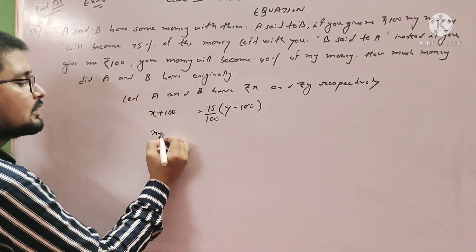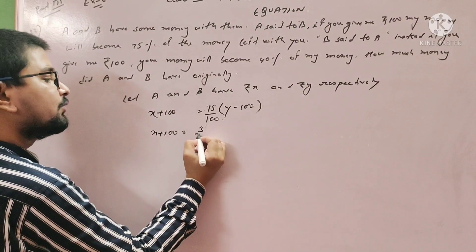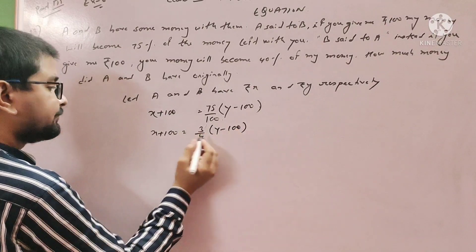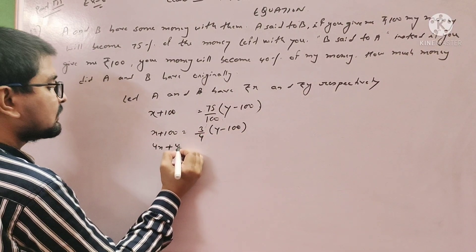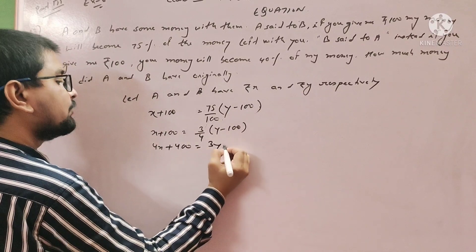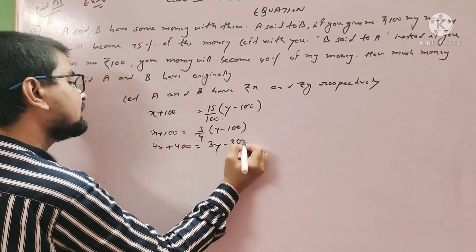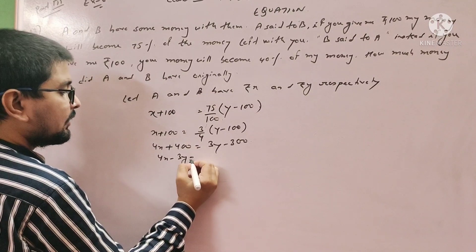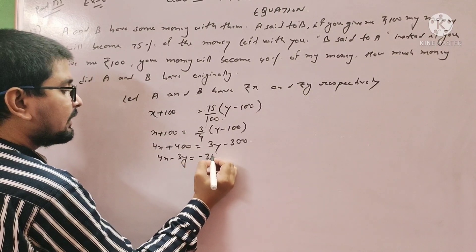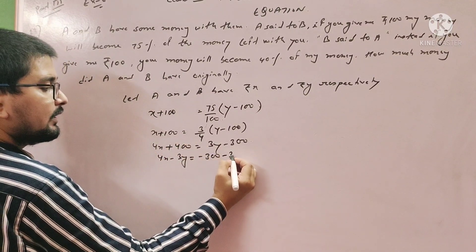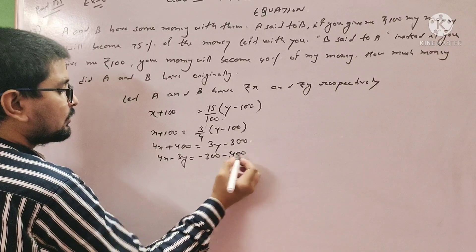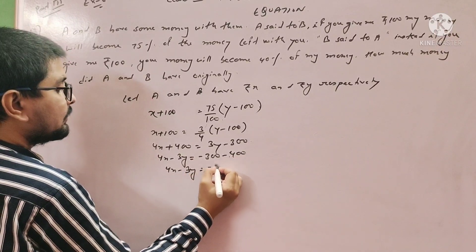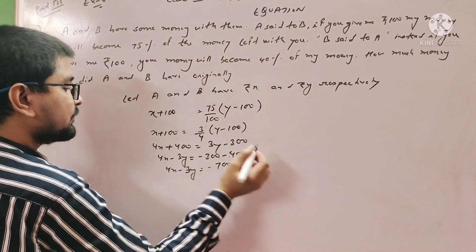For the first condition: A said if B gives him 100 rupees, A's money increases and B's decreases. So X plus 100 equals 75% of (Y minus 100), which is 3 by 4 times (Y minus 100). Expanding: 4X plus 400 equals 3Y minus 300, giving us 4X minus 3Y equals minus 700. This is equation 1.